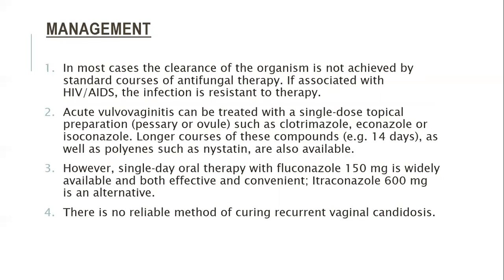Management: most cases — clearance of organism is not achieved by a standard course of antifungal therapy. If associated with AIDS, infection is quite resistant to therapy. Acute vulvovaginitis can be treated by single dose of topical preparation pessary or ovules such as clotrimazole, econazole, or isoconazole. Longer courses of 14 days as well as polyenes such as nystatin are also available. However, single-day oral therapy with fluconazole 150 milligrams is widely available and both effective and convenient. Itraconazole 600 milligrams is an alternative. There is no reliable method of curing recurrent vaginal candidiosis.